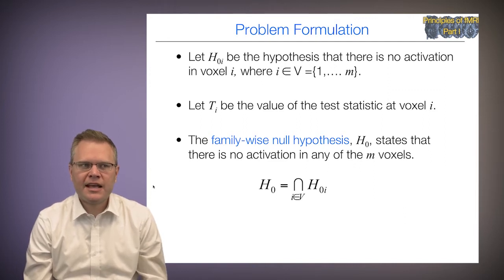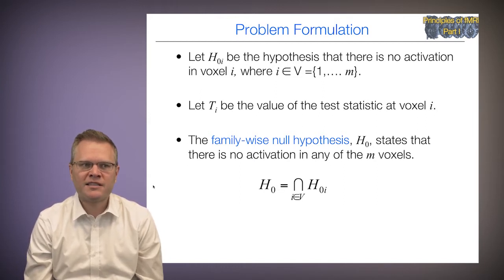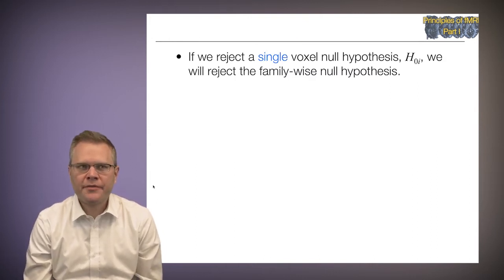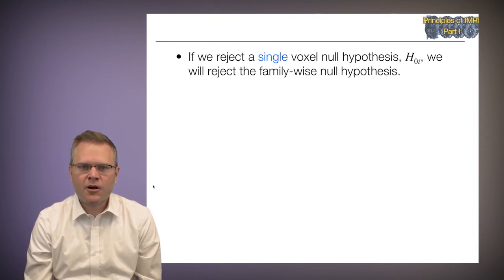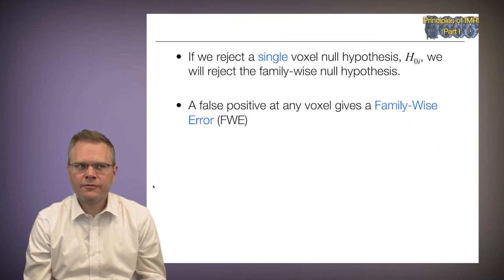If H0 is true, then for H0 to hold, there has to be activation in none of the areas. Mathematically, we write this as the intersection of all the H0(i)'s — H0 must be true in each voxel. So if we reject a single voxel null hypothesis, we reject the family-wise null hypothesis. A false positive at any voxel will give a family-wise error.